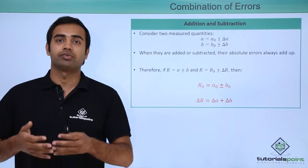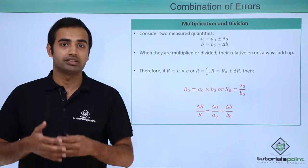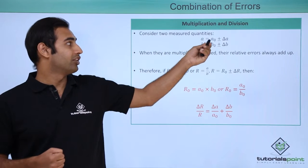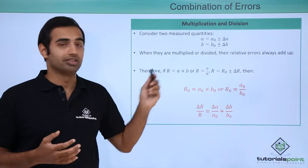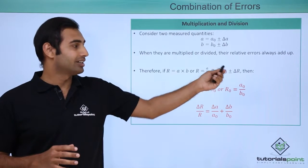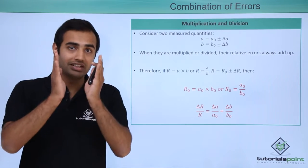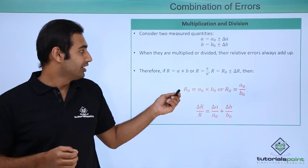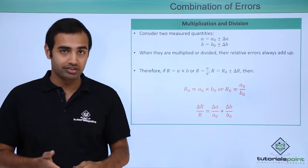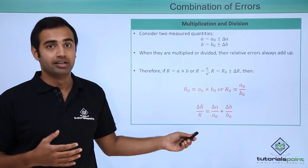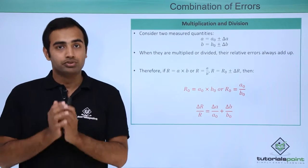Now let's talk about the case of multiplication and division. We have the same quantities a and b defined as a naught plus or minus delta a and b naught plus or minus delta b, and a third variable r stores the result of either multiplication or division. r can also be written as r naught plus or minus delta r. What we observe in case of multiplication and division is that the relative errors of the initial quantities get added in the final result. The r naught value is simply a naught times b naught for multiplication or a naught divided by b naught for division, and the relative error in the result, delta r by r, is simply delta a by a naught plus delta b by b naught.